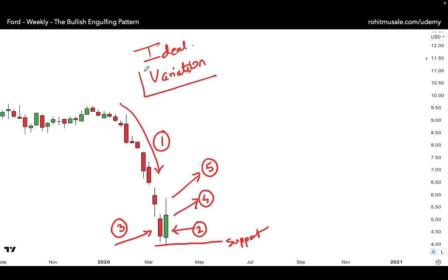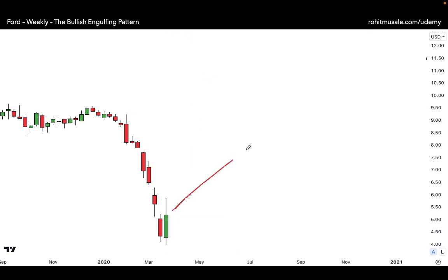If you have an ideal candle pattern, then the probability of reversal is very high. Now reversal doesn't mean that the price will go up from here. Reversal simply means that the price can either go up or sideways. Reversal also means that the probability that the price will go down from here is very low.